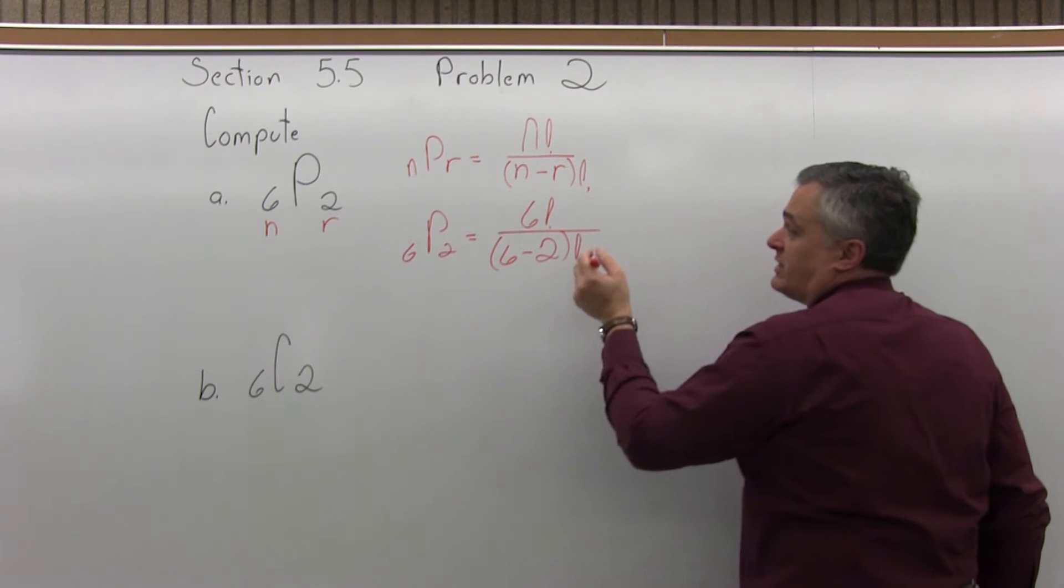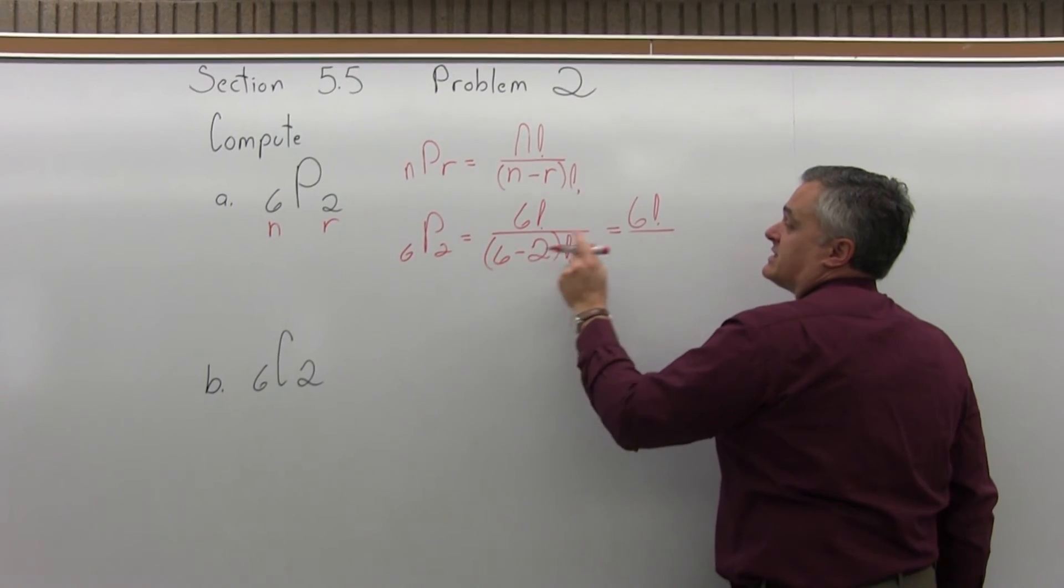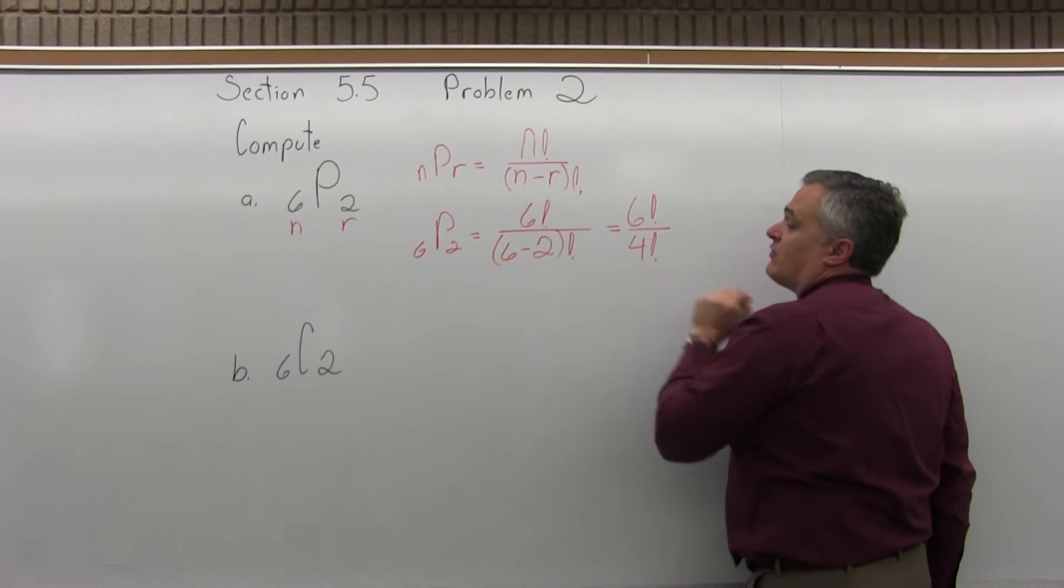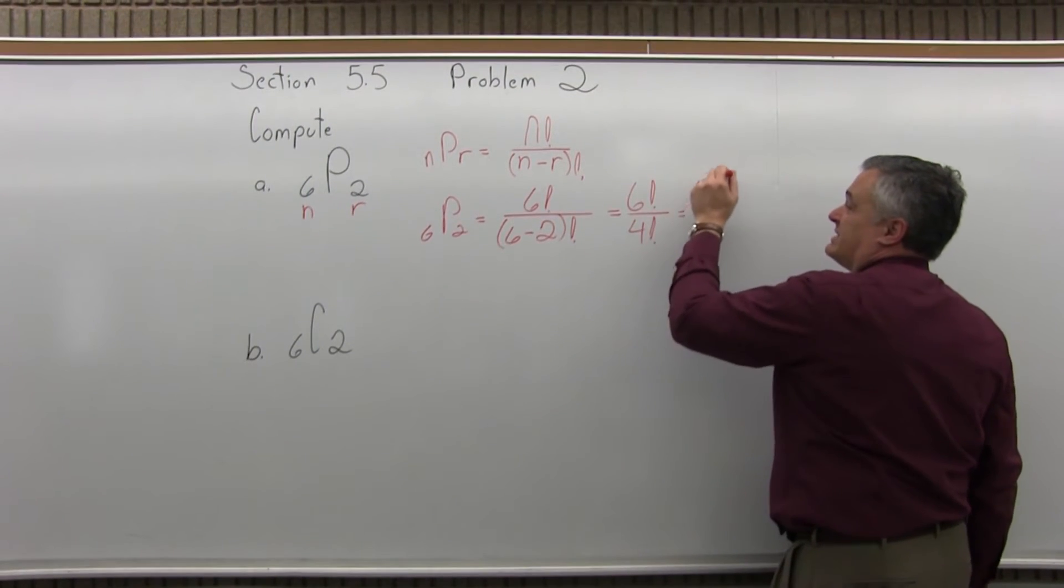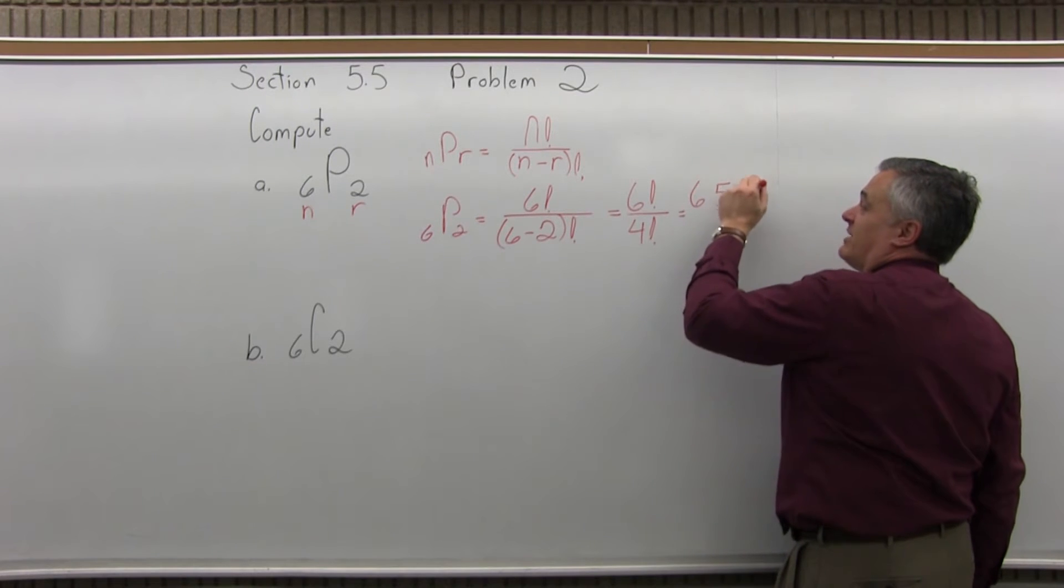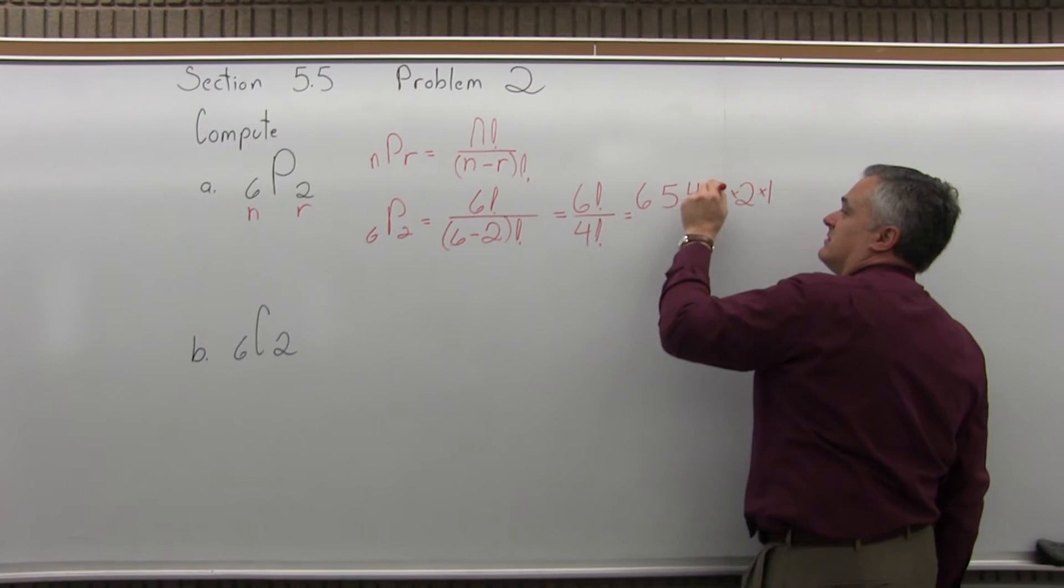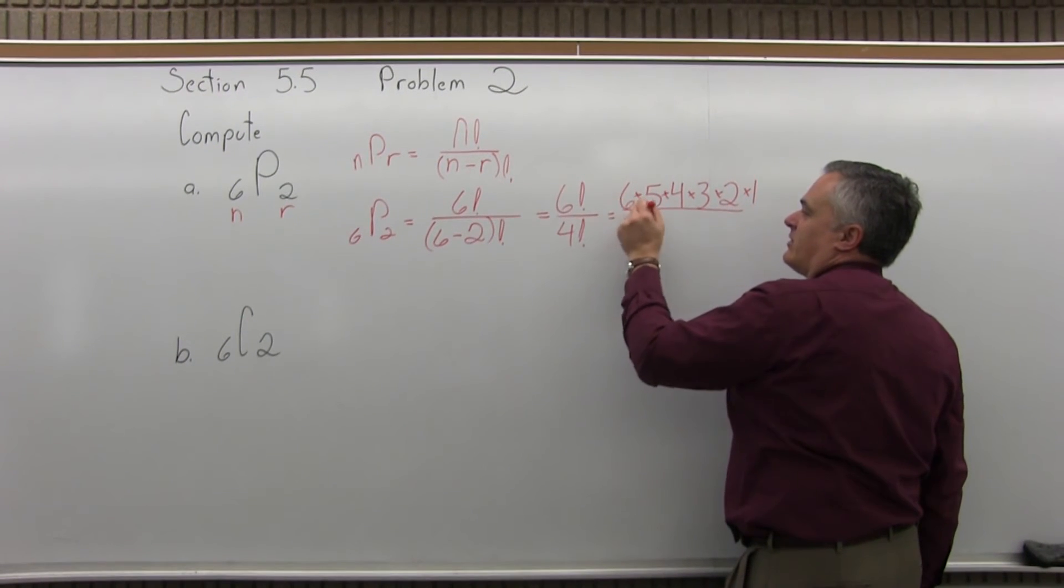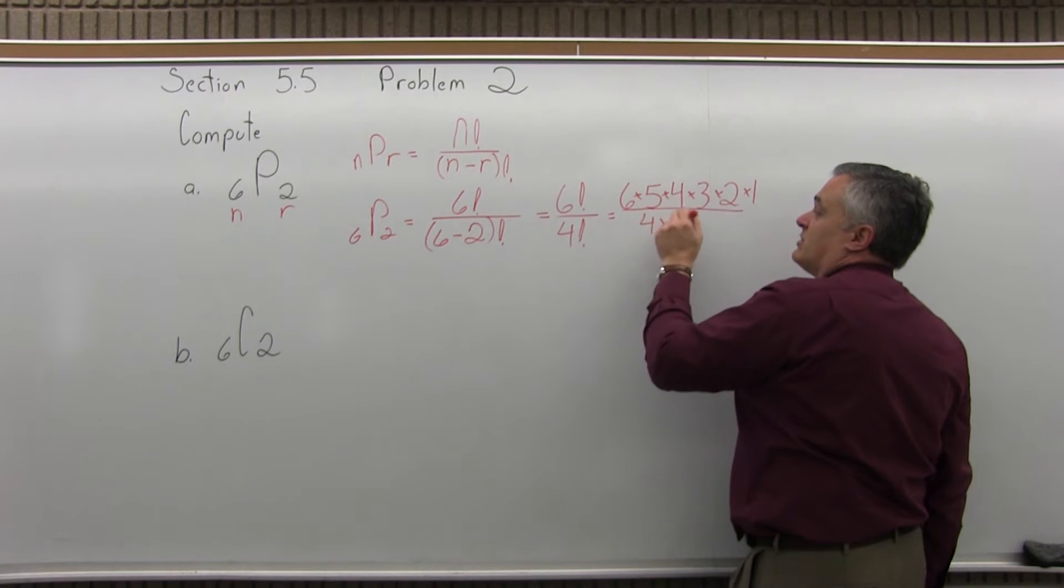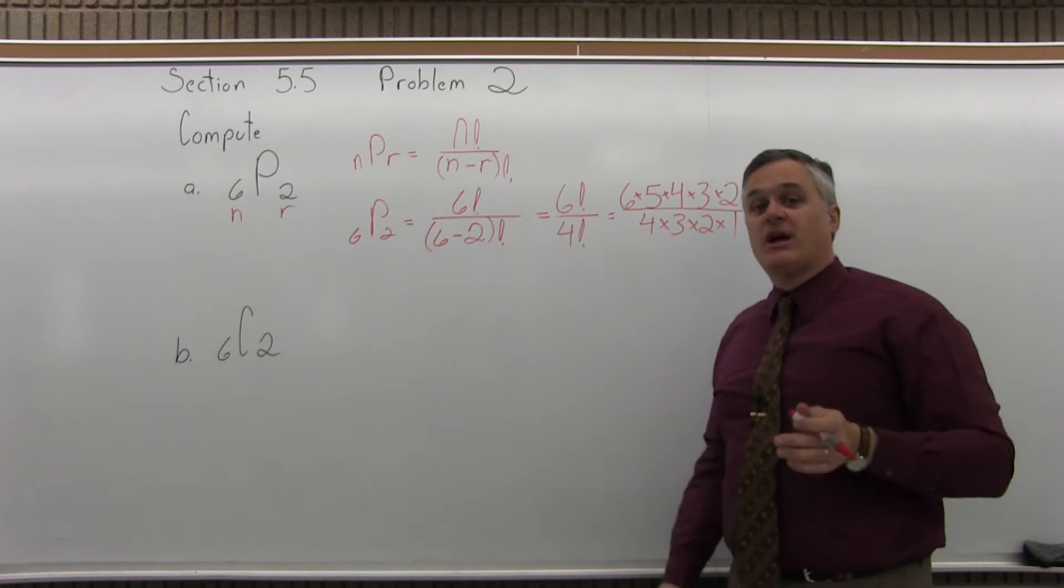And now I can simplify what 6 minus 2 is. What I have is 6 factorial over 6 minus 2 is 4 factorial. So 6 factorial is 6 times 5 times 4 times 3 times 2 times 1. And in the denominator, 4 factorial is 4 times 3 times 2 times 1.